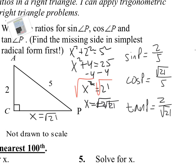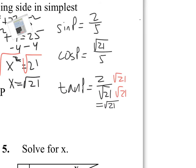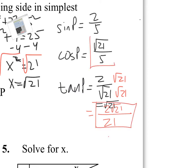We don't want to leave tangent as 2 over square root of 21 because it's not simplified — we want no square roots in the denominator. So we multiply top and bottom by the square root of 21. That gives us 2 square root of 21 on top, and square root of 21 times square root of 21 is 21 on the bottom. Now we have all our ratios.